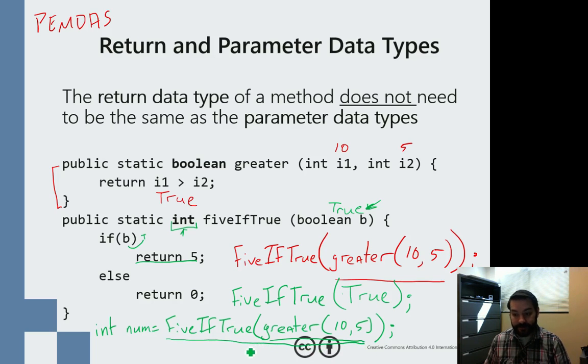Again this gets evaluated first. This then gets evaluated, and then that is going to give me back 5, which I need to store in an integer because, again, that is my return type.